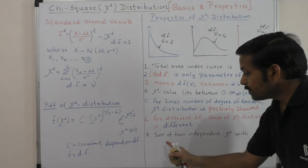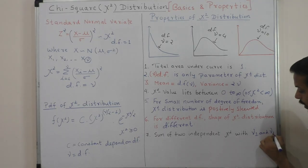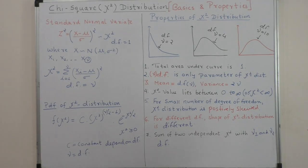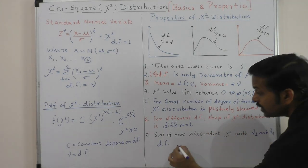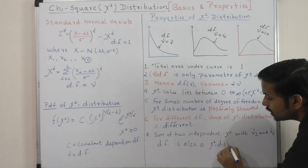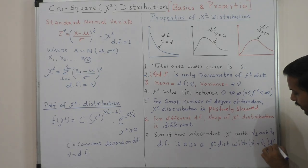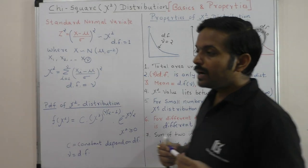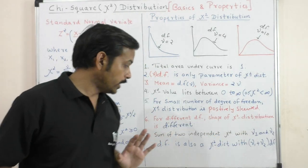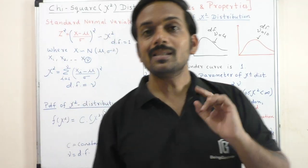Property 7: The sum of two independent chi-square variates with nu1 and nu2 degrees of freedom is also a chi-square distribution with nu1 plus nu2 degrees of freedom. So, if we sum two independent chi-square variates with degrees of freedom nu1 and nu2, we get a chi-square distribution with degree of freedom nu1 + nu2.